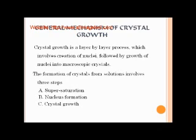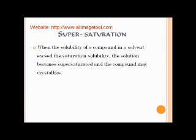General mechanism of crystal growth: crystal growth is a step-by-step process. It involves mainly three steps: supersaturation, nucleus formation, and crystal growth. Supersaturation is when the amount of dissolved solute in a solvent exceeds the equilibrium solubility — that is, when the solubility of a compound in a solvent exceeds the saturation solubility, the solution becomes supersaturated and the compound may crystallize.